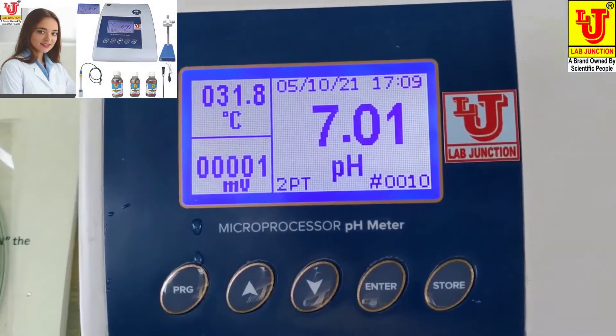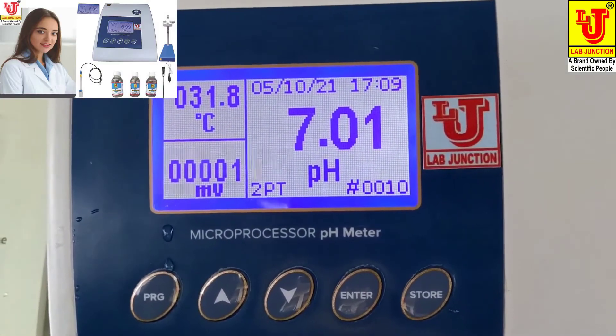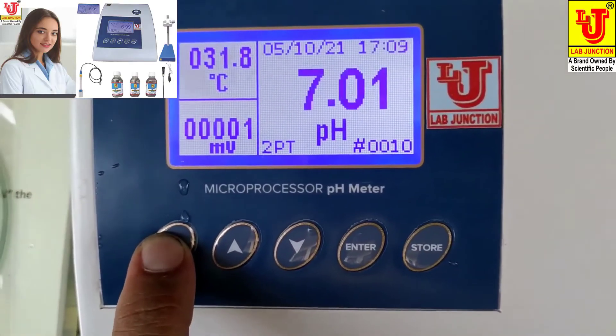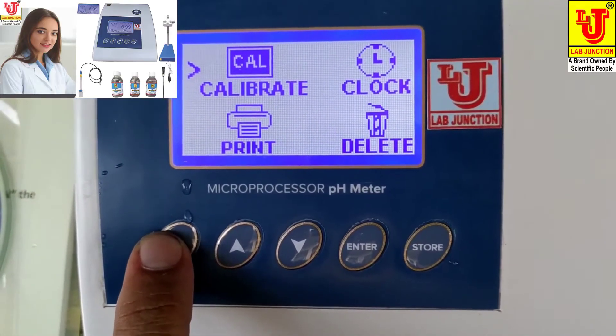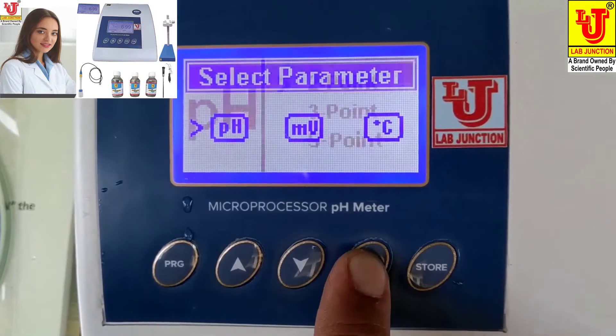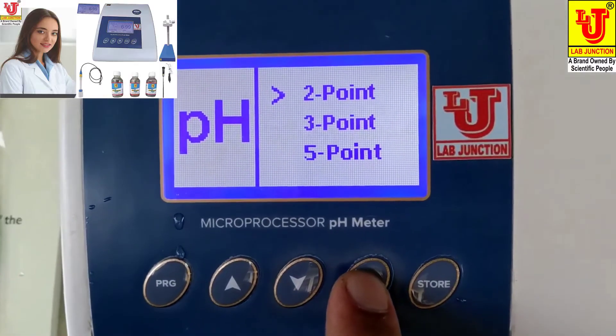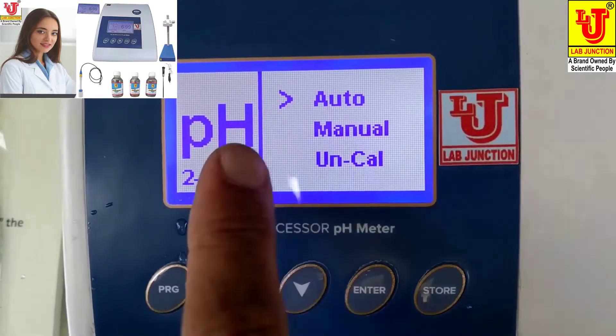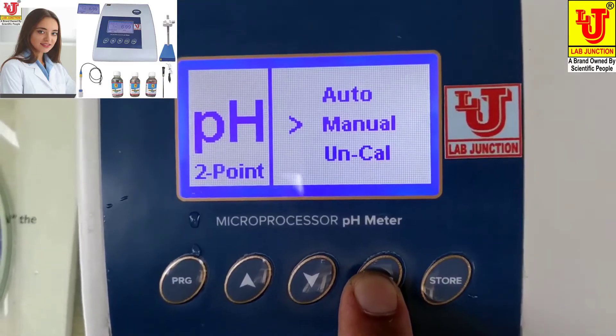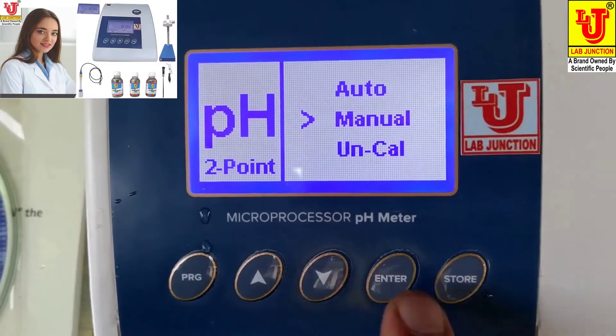Now next mode is, again enter on calibrate key, again pH enter. And this is two-point calibration. You go to manual mode and press enter. Now you can calibrate to manual mode, enter.